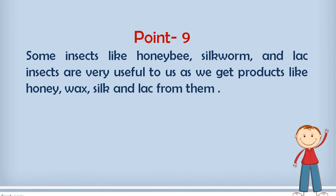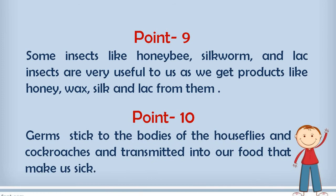Point number 10 is telling about the house flies and cockroaches, why they are harmful to us. It is very simple because house flies and cockroaches can sit anywhere. They love to sit at all the dirty places and after that when the germs stick in their legs or in any parts of their body, they can harm us because the same house flies and same cockroaches can sit on your food too. And very easily they will transmit the germs from their body to our food and definitely when we will eat that food, we will fall sick.